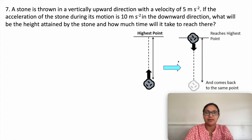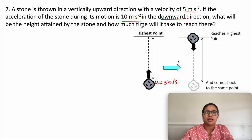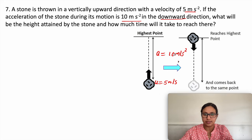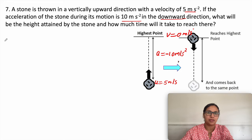Next question: a stone is thrown vertically upward with a velocity of 5 meter per second. If the acceleration during its motion is 10 meter per second square in the downward direction, what will be the height attained and how much time will it take? Initial velocity u is 5 m/s, and acceleration is -10 m/s² (opposite to motion). At the highest point, final velocity v is 0 meter per second.